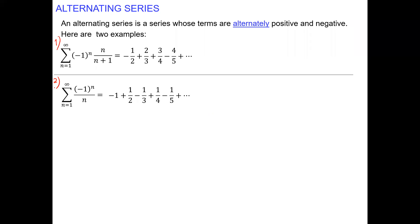It depends on whether the first term is positive or negative. And then we will have a main formula — the magnitude — which we call b sub n. So for the second example, b sub n is one over n. For the first example, negative one to the n times n over n plus one gives us one half, two thirds, three fourths, four fifths, and so on.